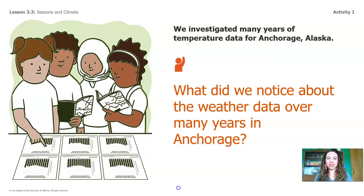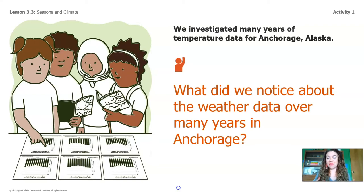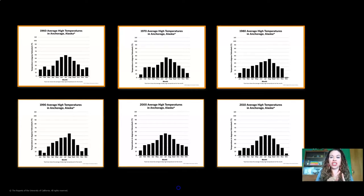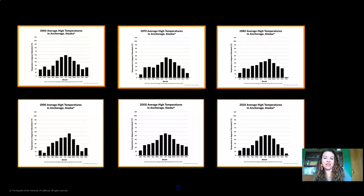In the last lesson, we investigated many years of temperature data for Anchorage, Alaska so we could practice looking at data over the long term. We noticed that every single one of the six cards had the same shape — temperatures started low in January, February, March, got warm in May, June, July, August, and then got cool and cold again in September, October, November, and December. So in Anchorage, we can expect to see that same pattern of temperature change over the seasons every year.